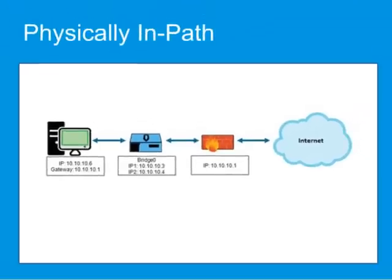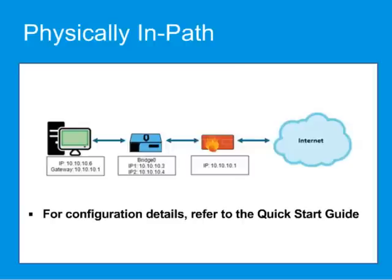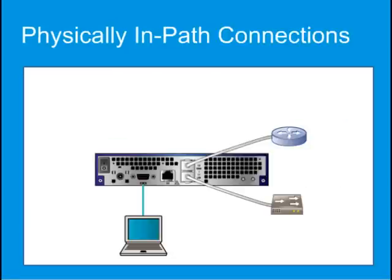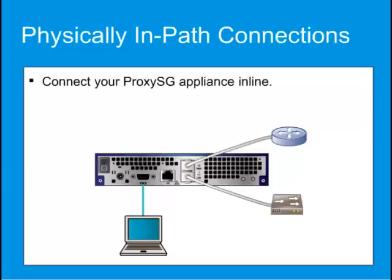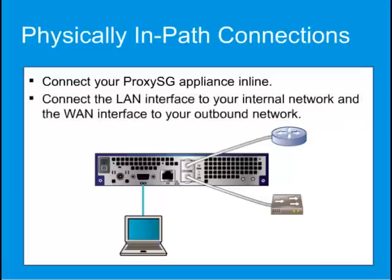For initial configuration instructions, refer to the quick start guide that comes with the ProxySG. For a physically in-path deployment, connect your ProxySG appliance in-line between your user network and your firewall using a pair of bridged interfaces. Connect the LAN interface to a switch on your Internet network and the WAN interface to the router on your outbound network. The ProxySG will now receive all traffic directly.